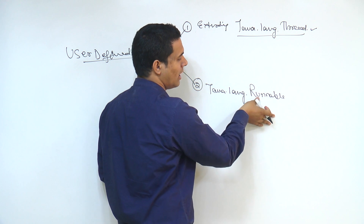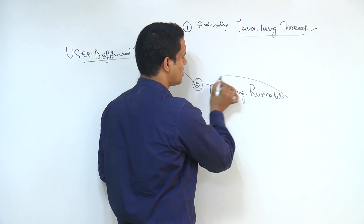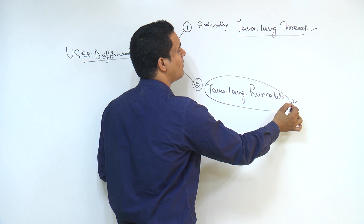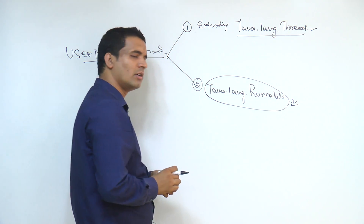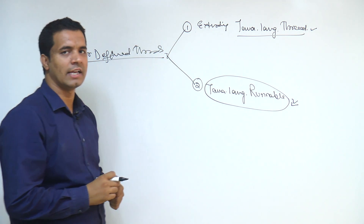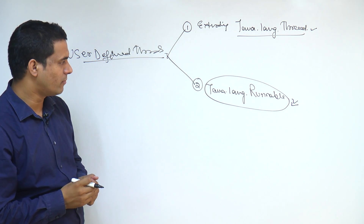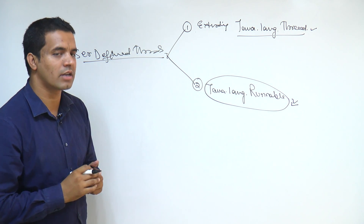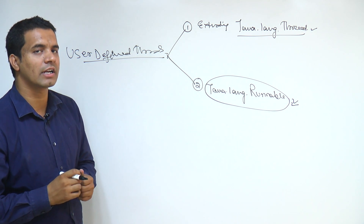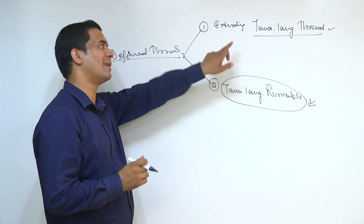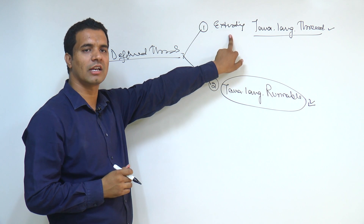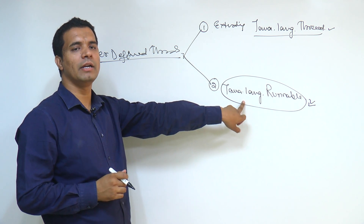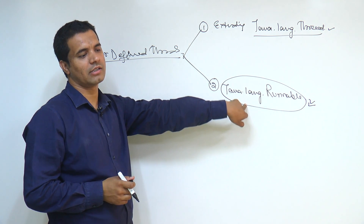So, using this Runnable interface we can perform things and write our own thread. To summarize: one way is by extending the Thread class, and the second one is by implementing Runnable.